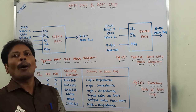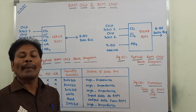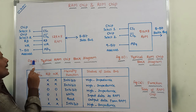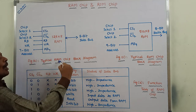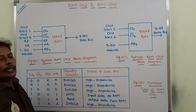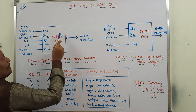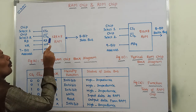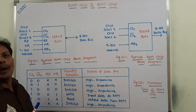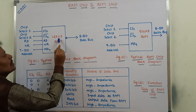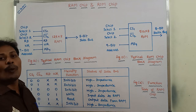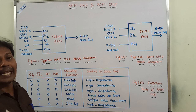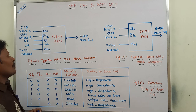RAM and ROM belong to the main memory or primary memory. Figure A shows the block diagram of a RAM chip. The capacity of the RAM chip is 128 into 8. That means the RAM chip consists of 128 words, and each word contains 8 bits.